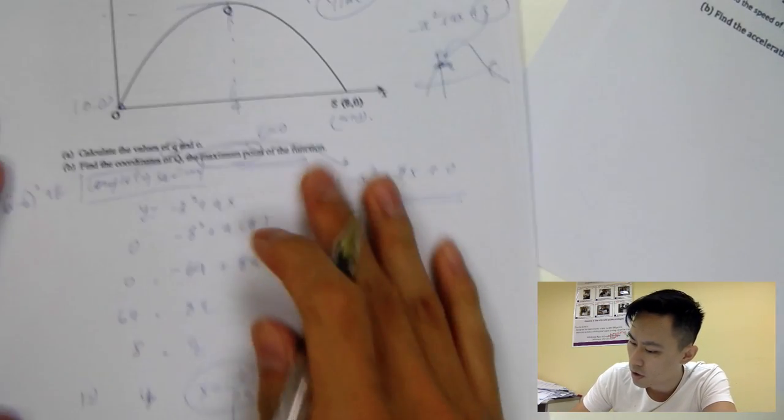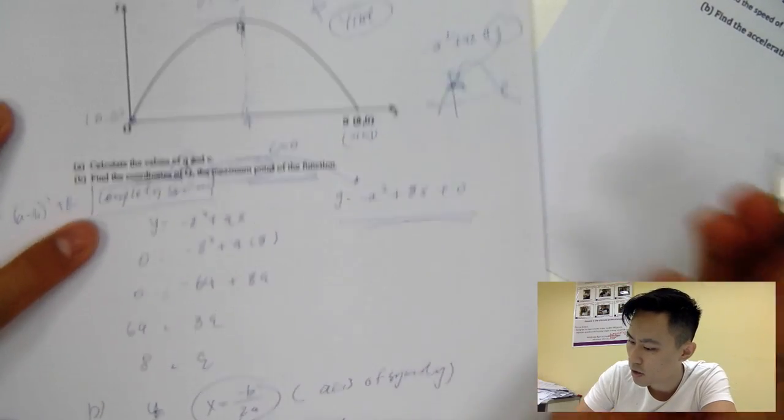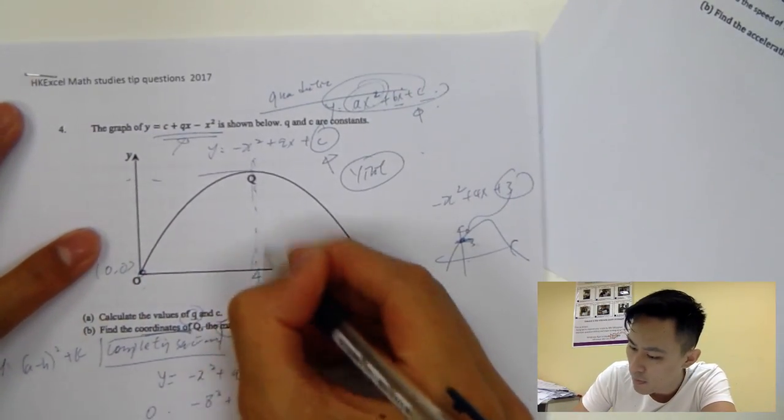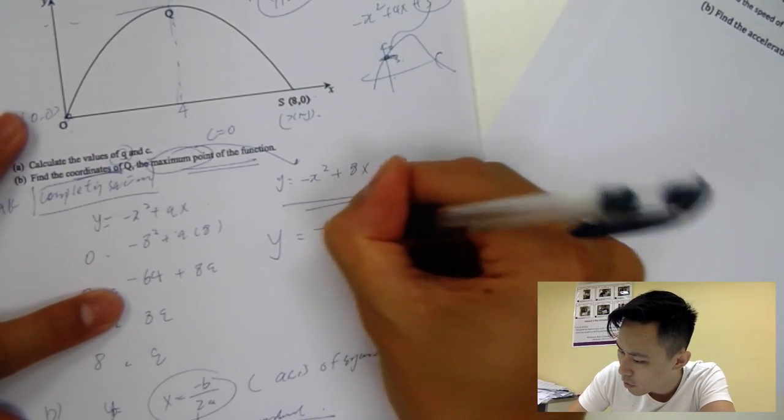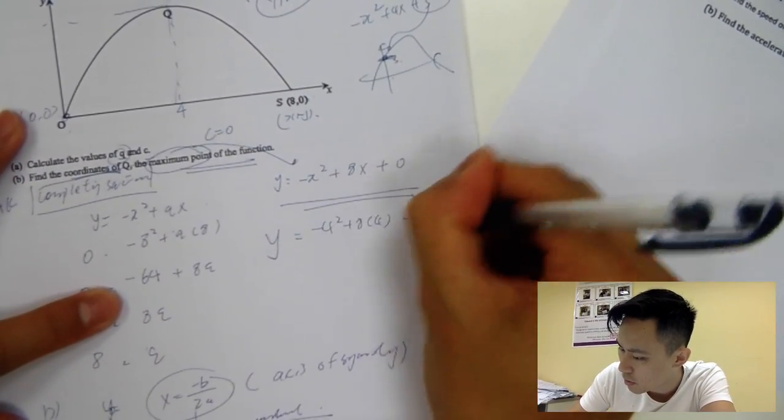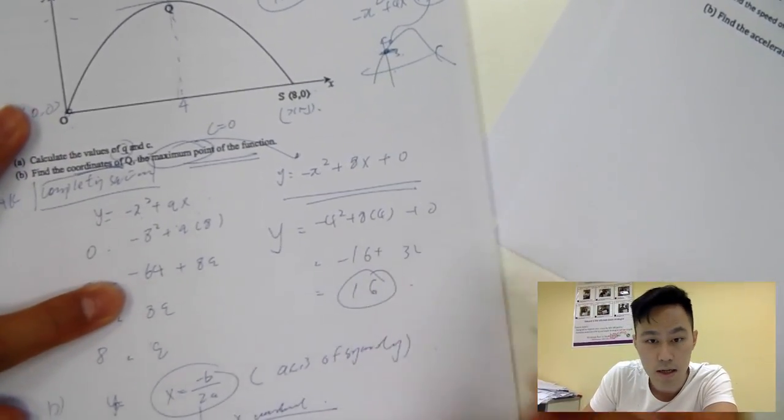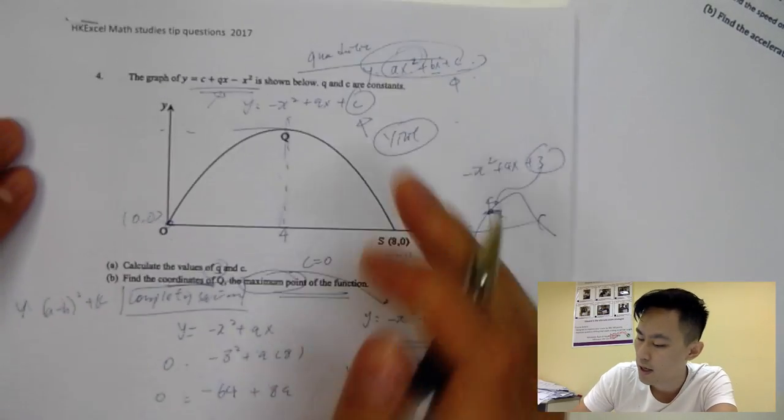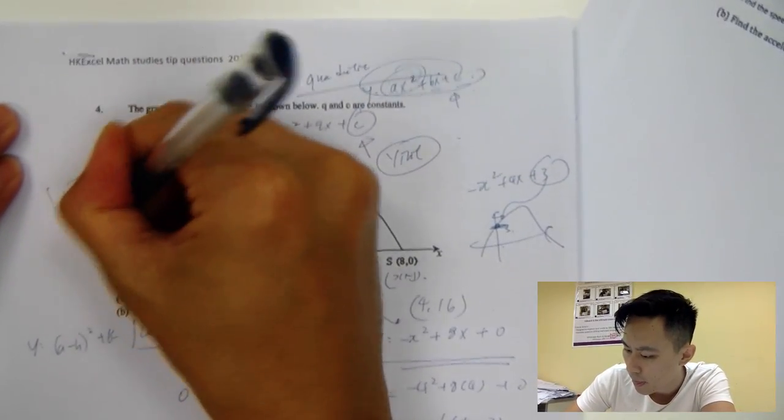So when I get 4, you need to find the coordinates. That means you need to find x and y. So I need to find a y value as well. So I sub back in, sub in 4 back into the original equation. So y is equal to minus 4 squared plus 8 times 4 plus 0. So minus 16 plus 32, that would be 16. So the answer would be 4, 16. So this is usually a 5 to 6 mark question in section A.